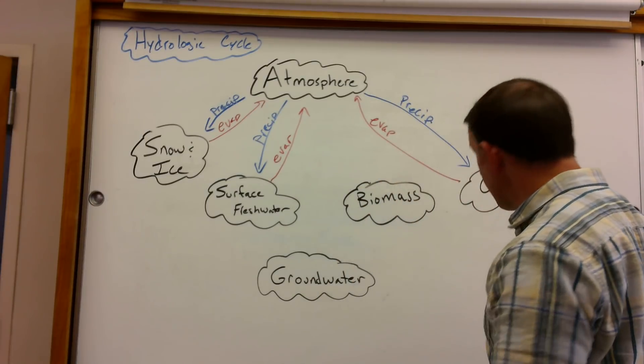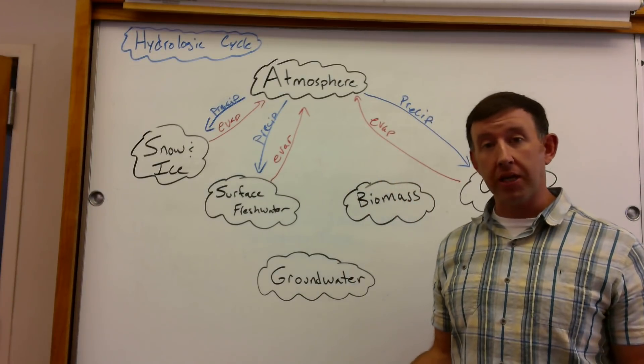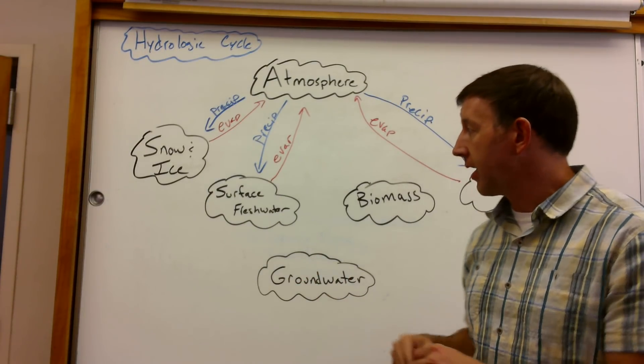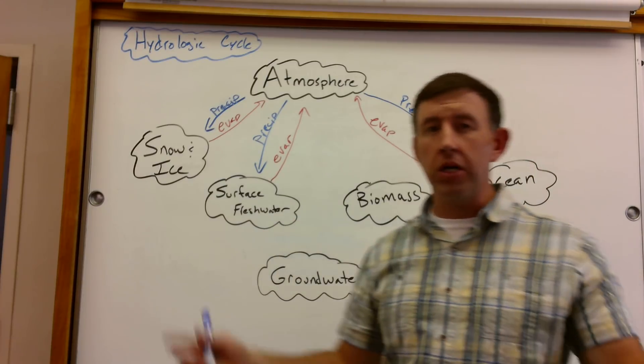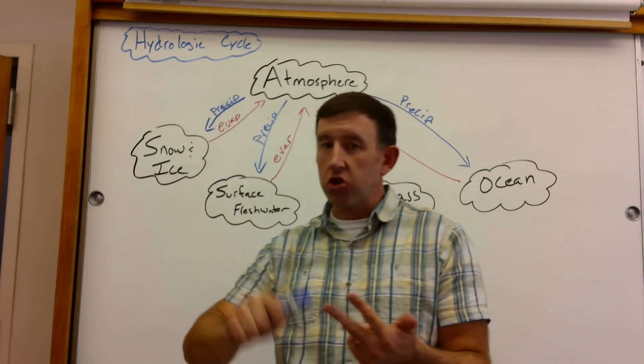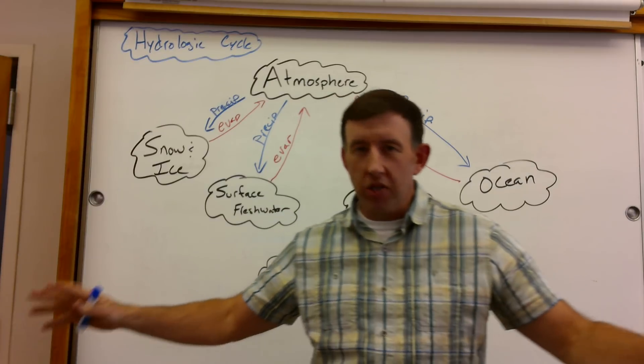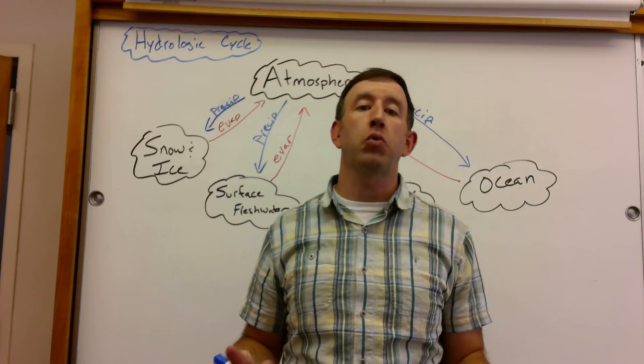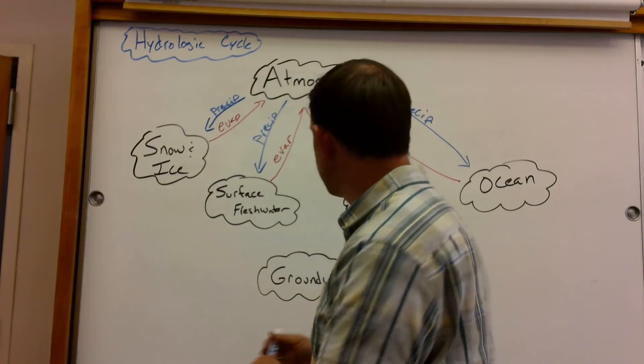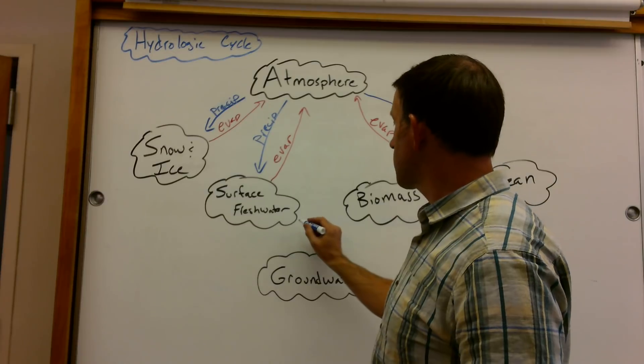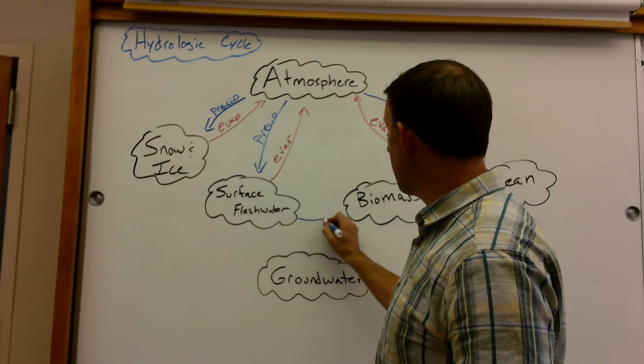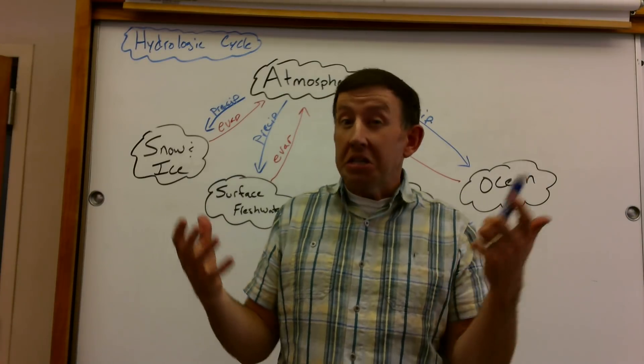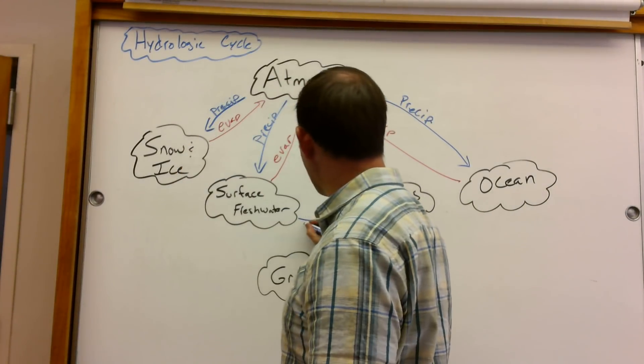So a couple of maybe newer terms for you. You guys know that plants take water up through their roots from the soil. So we've got surface fresh water, and that would be rivers, lakes, streams, ponds. We're also talking about water that's kind of the surface of the soil directly accessible to our plants. And so the process by which surface fresh water ends up in our biomass, plants take it up,